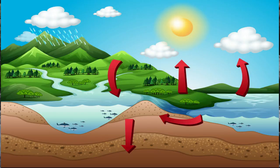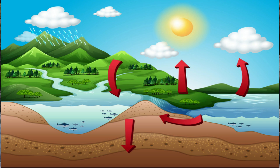Water evaporates from rivers and lakes due to the heat of the sun. It rises up and forms clouds. Clouds move due to wind. We get rain from the clouds. Rain water gets collected in rivers and flows to the sea and ocean. This is a continuous process and it goes on and on. It is called the water cycle.